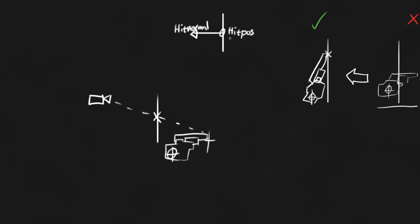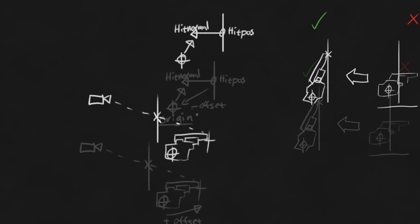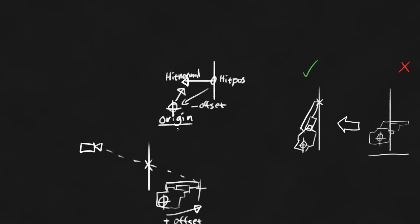We need two things from these variables. We need to know where our hand is going to be, and we need to know what rotation we need to look in. To get the origin, all we're going to do is subtract the offset that we originally added from the hit position to get the new origin location — that gives us our hand position.